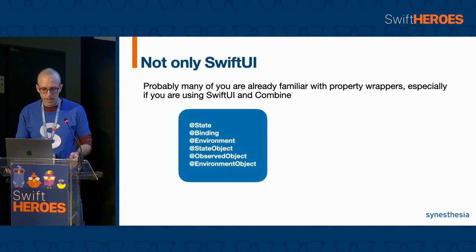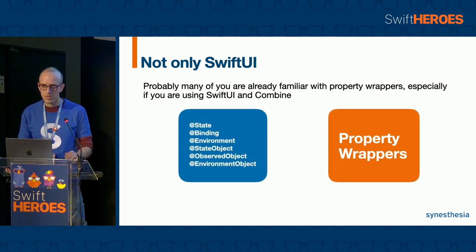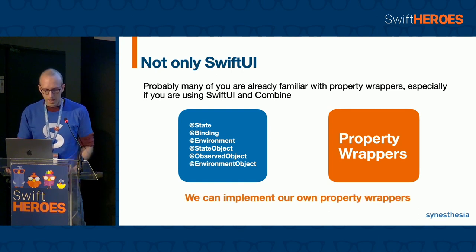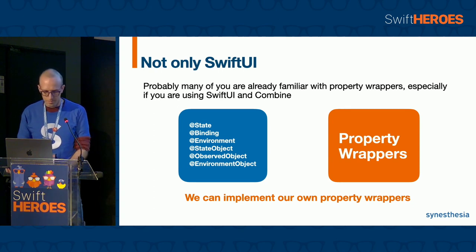That's because State, Binding, Environment, etc. are property wrappers. But we can implement our own property wrappers without using SwiftUI and Combine.